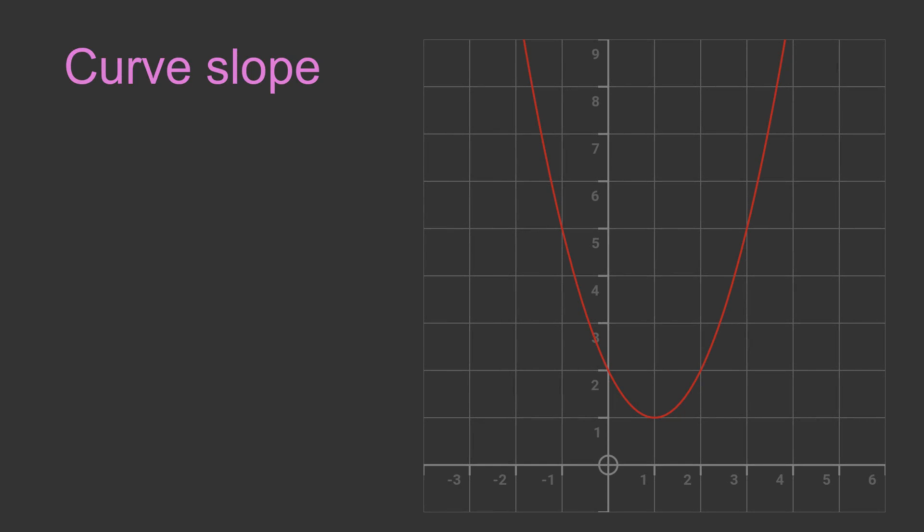Here is a quadratic curve. Its formula is X squared minus 2X plus 2. How do we find the slope of the curve? Well the first thing to notice is that the slope of the curve is different at different points on the curve.